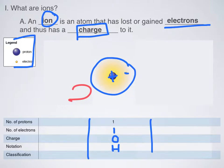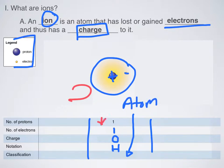Where it says classification, the classification for this is an atom. How do we know it's an atom? It's because I have an equal number of protons and electrons — because I have one proton and one electron, that makes this an atom.